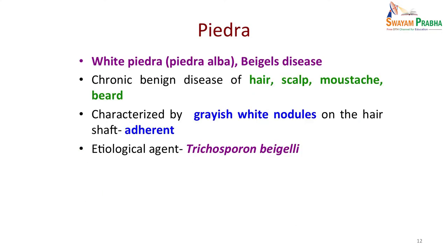Another superficial infection which is very commonly seen — about 70% of skin OPD cases — includes the piedra infections. White piedra, also known as piedra alba or Beigel's disease, is a chronic disease of hair of the scalp, moustache, beard, etc., characterized by greyish white nodules on the hair shaft that are adherent to the hair shaft. The etiological agent is Trichosporon beigelii.